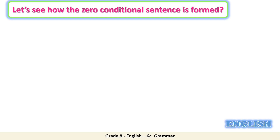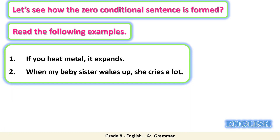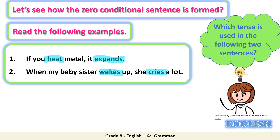Let's see how the zero conditional sentence is formed. Read the following examples. Number one: if you heat metal it expands. Number two: when my baby sister wakes up she cries a lot. Now let's detect the verbs in the sentences. Sentence one: heat and expands. Sentence two: wakes and cries. Take a look at the verbs and tell me which tense is used in these two sentences. That's correct — the present simple.